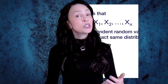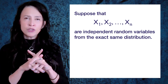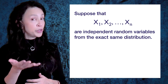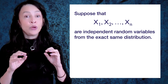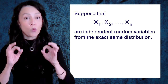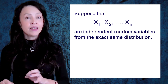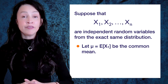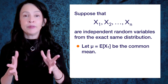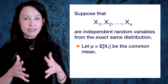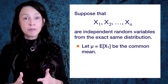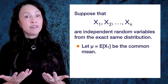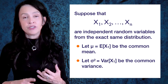Suppose I have a list of random variables X1, X2, X3 through Xn. Suppose these are all independent of each other and suppose they have the exact same distribution - maybe they all have an exponential distribution with one rate that's shared by all of them. I'm going to let mu be the expected value of X1. Since all of these random variables have the same distribution and the same probability density function, the integrals will all be the same - they all have the same common mean mu. Sigma squared, the variance of X1, is also going to be the common variance for X1, X2, through Xn.